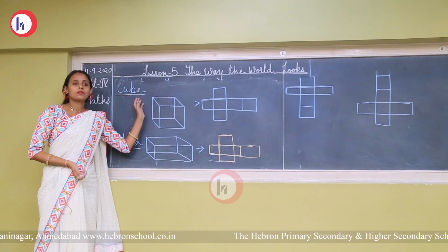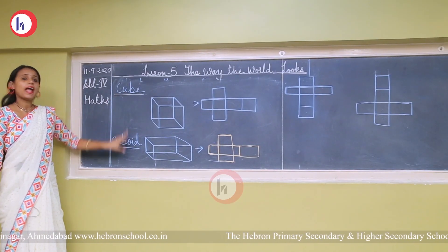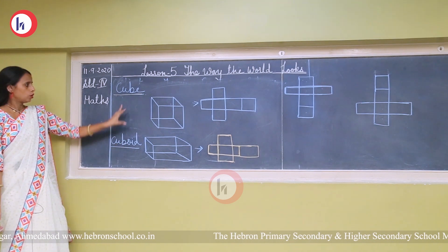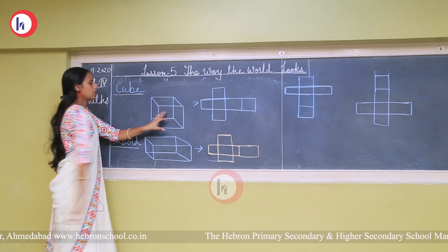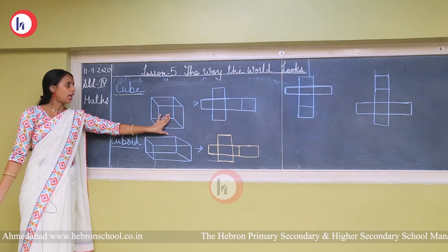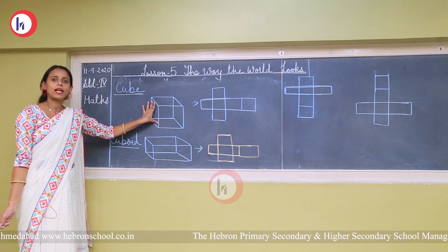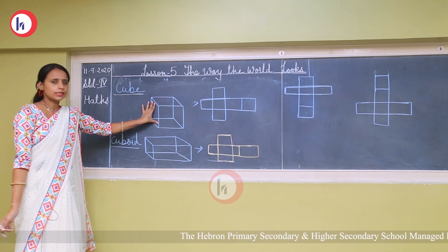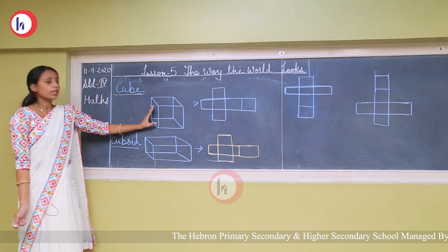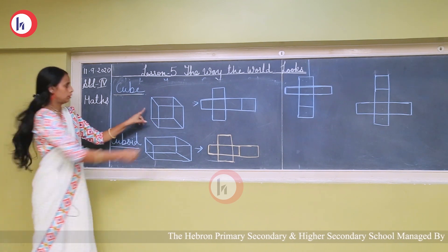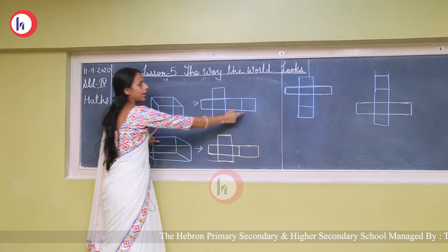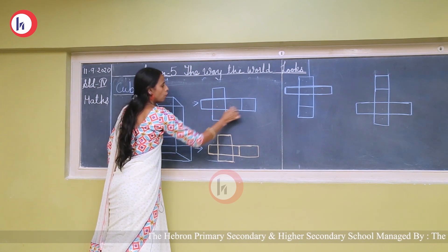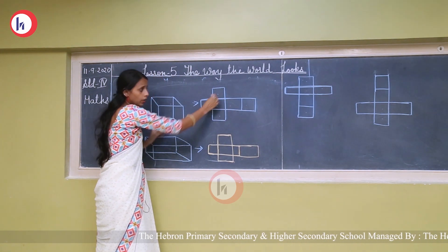Now here are a cube and cuboid — two solid shapes. When we look at the cube, there are 6 faces and 12 edges, which you have learned in your previous standard. But when we open the cube, it looks like this — all 6 faces are laid out flat.